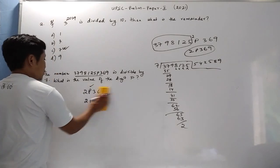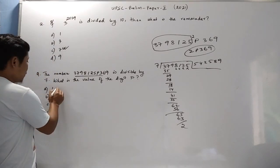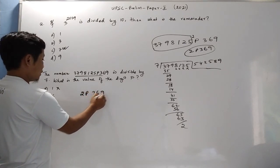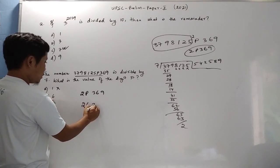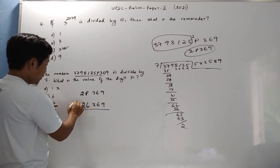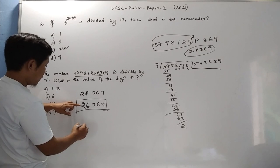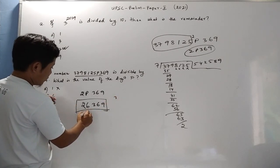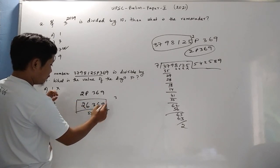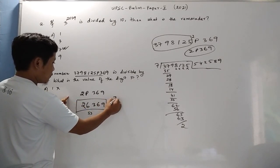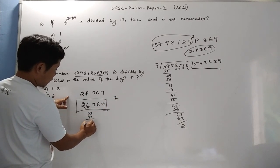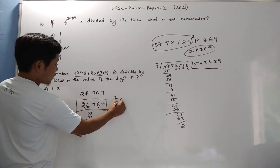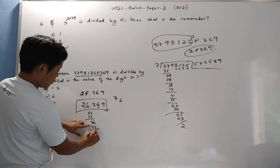Next, 2P369 means 26369. Will it be divisible by 7? Let us see. 7 times 3 is 21, remainder 53. 53 divided by 7 is 7 times 7, that's 49, remainder 46. 7 times 6 is 42, remainder 49.